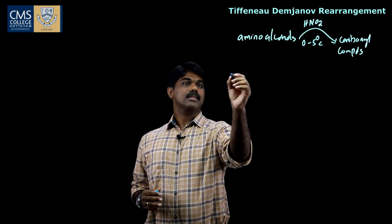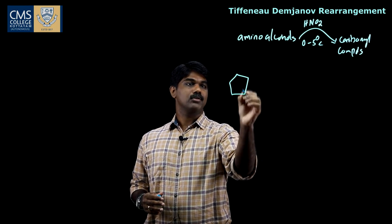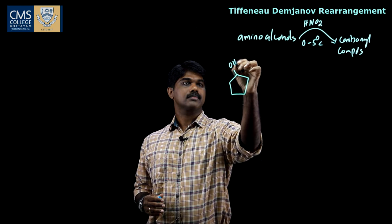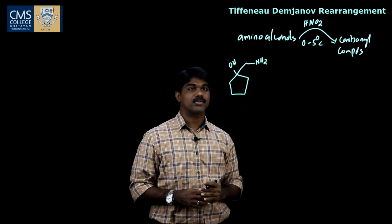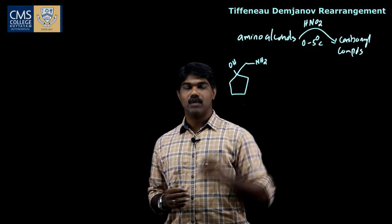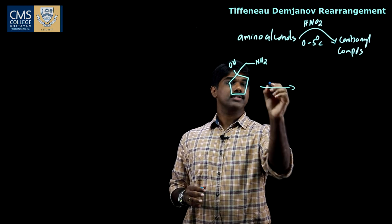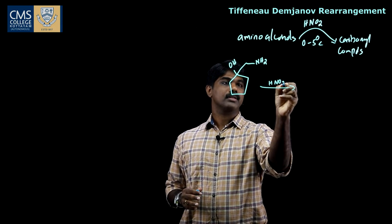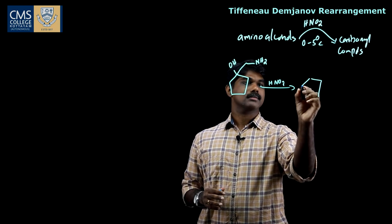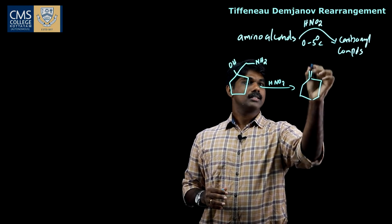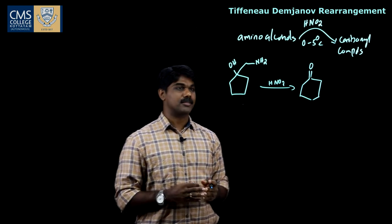Let us see one example. This is an example of a 2-amino alcohol. When this amino alcohol is treated with HNO2, we get cyclohexanone as the product.